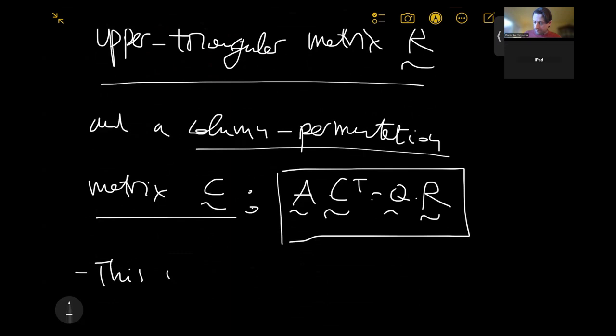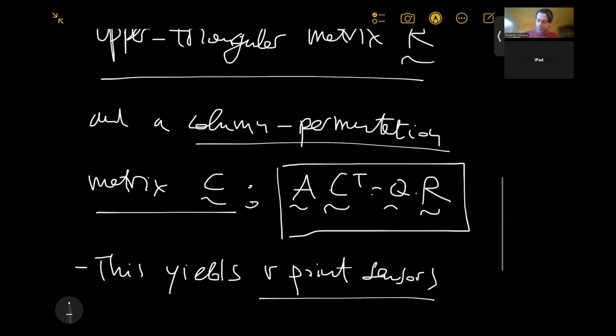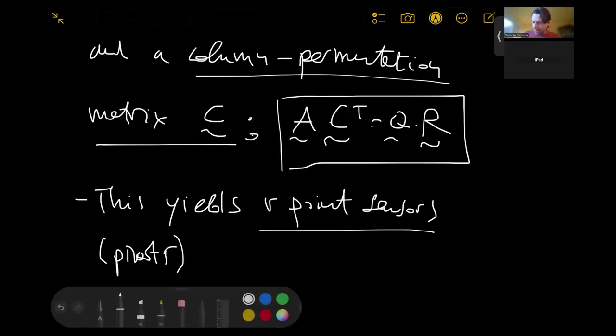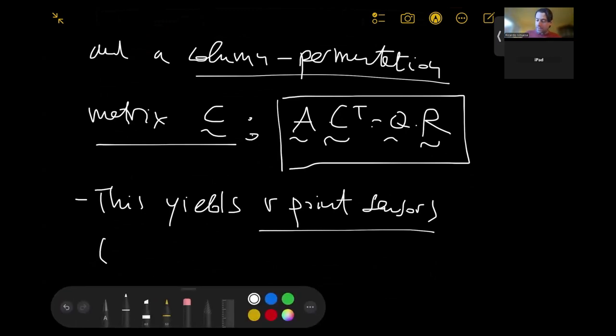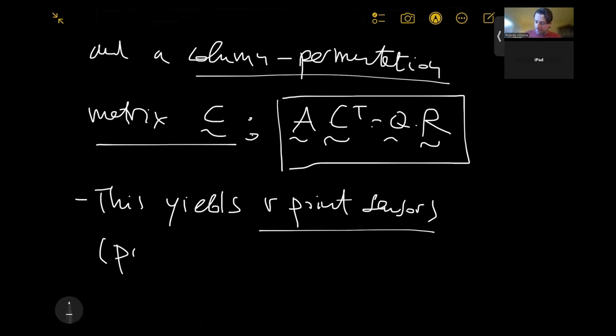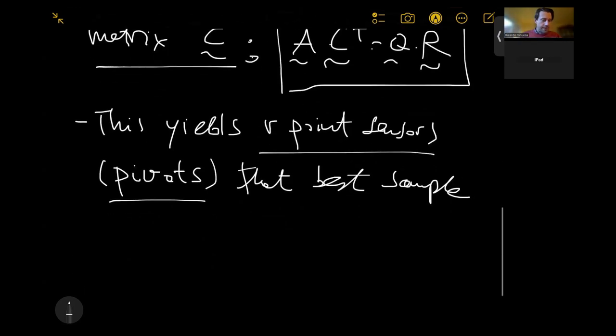This operation yields point sensors, and those point sensors we're going to call pivots. The name comes from this matrix permutation operation that this matrix is actually doing on my original one for this matrix decomposition. These pivots best sample, for example, the R basis modes.